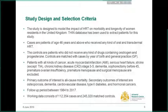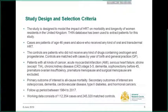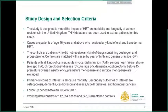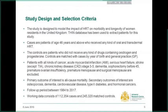We also excluded patients with serious heart failure, stroke, chronic kidney disease stage 3 to 5, dementia, premature ovarian insufficiency, premature menopause, and surgical menopause. Our primary outcome of interest is all-cause mortality. Secondary outcomes of interest are osteoporosis, dementia, cardiovascular disease, type 2 diabetes, and hormonal cancers.